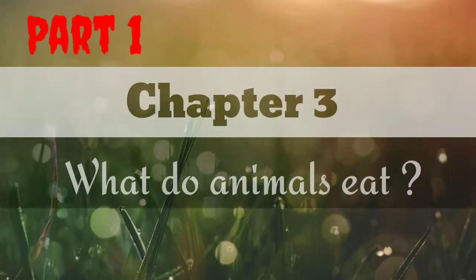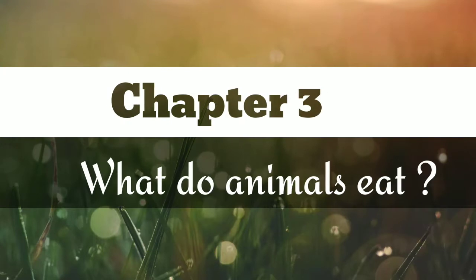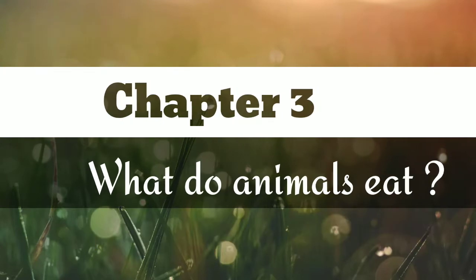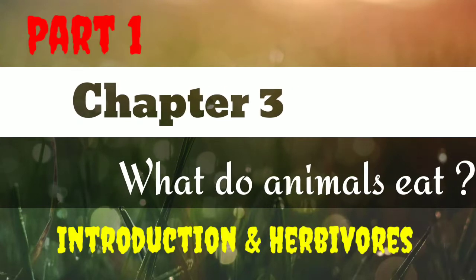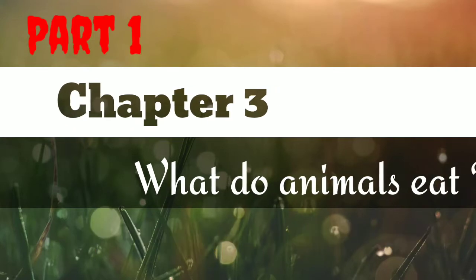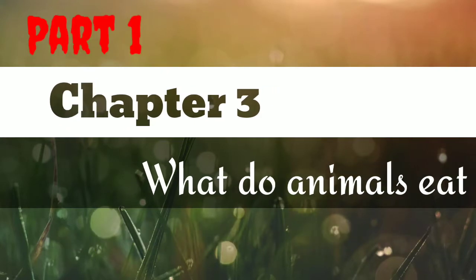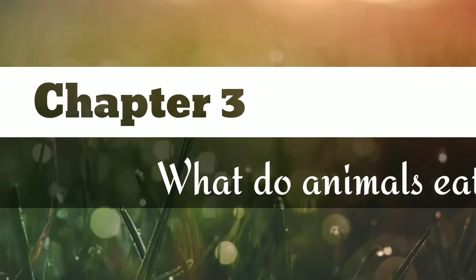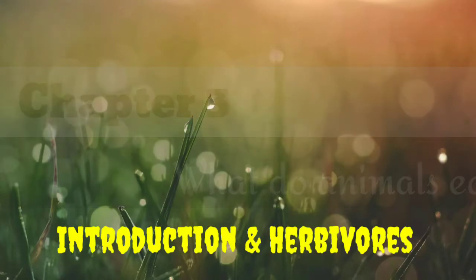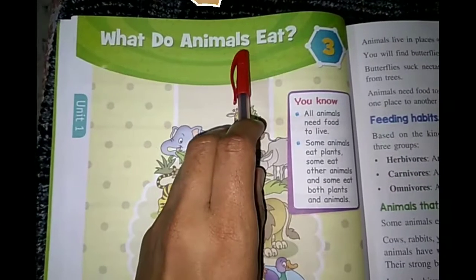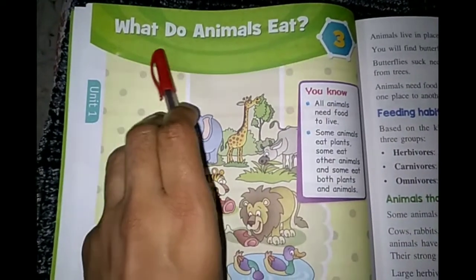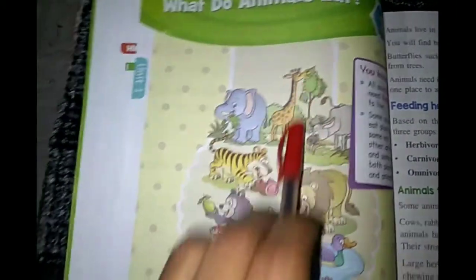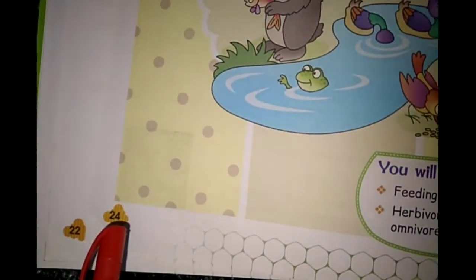This is chapter number 3: What do animals eat? We will be discussing in general what are the types of animals based on eating habits, and herbivores ke baare mein hum zyada detail mein padhenge. This chapter is on page number 24 of your textbook.